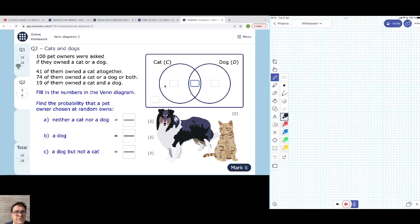So you can't just put 41 in here, because that would be saying that 41 people only own a cat. But what this is saying is 41 people own a cat, of which some only own a cat, but some also might own a dog.